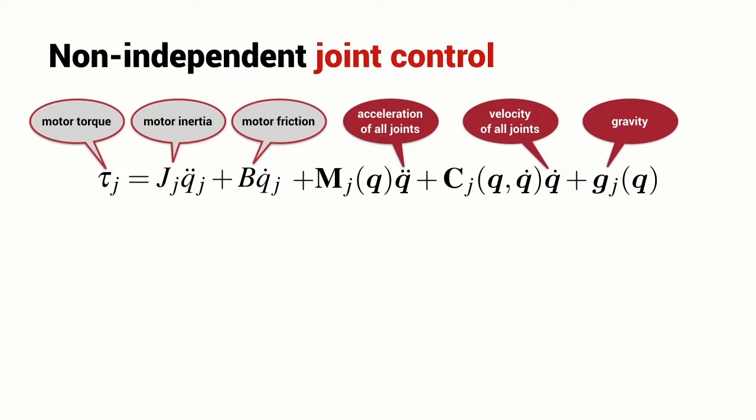For example, if I multiply the Jth row of the matrix M by the column vector which is the acceleration of all of the joints, the result will be a scalar. This is a scalar expression because it's about the torque acting on joint J.